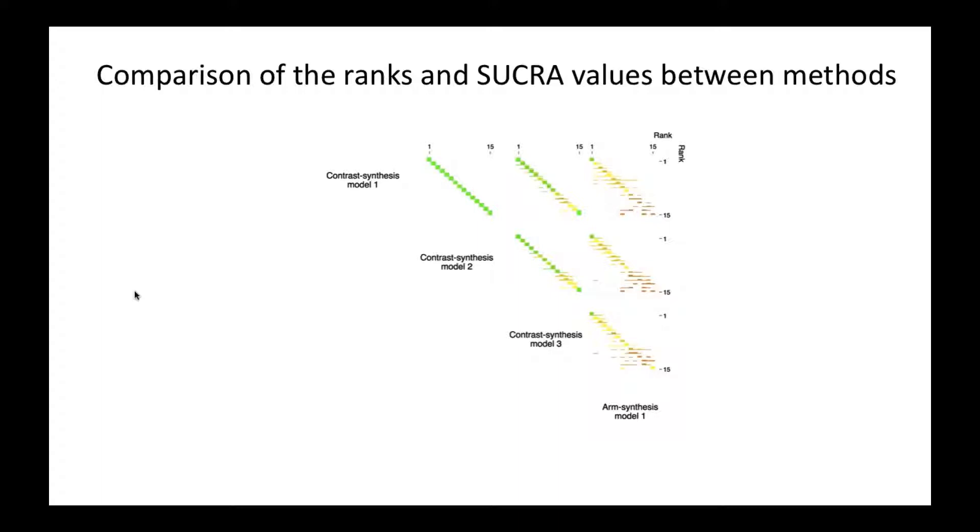Where we see poor agreement, we'll start seeing more spread in the bars and more yellow, brown, and orange colors. This happens if we look at the arm synthesis models compared to the contrast synthesis models. Rank number 1 is generally the same between the arm synthesis models and the contrast synthesis models, but the rest of the ranks start to show differences.